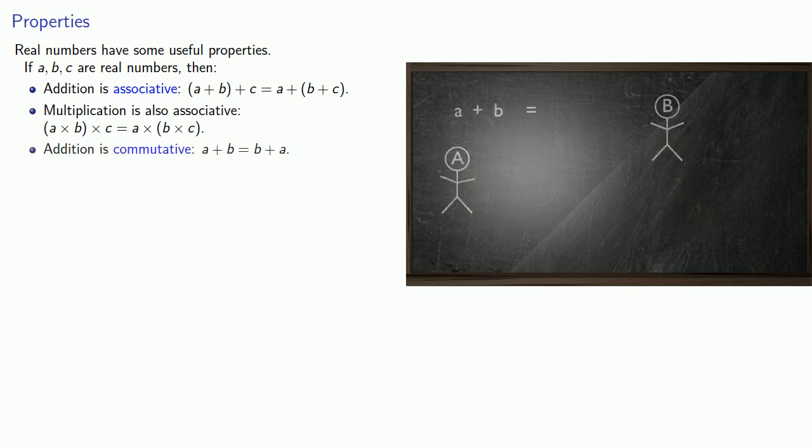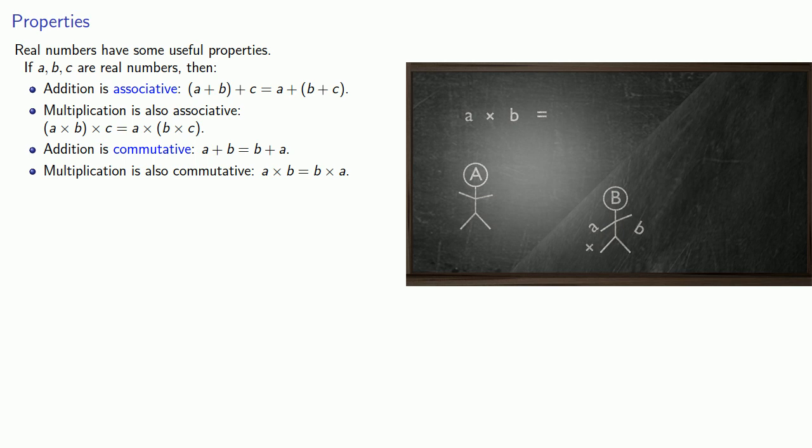Addition is also commutative. a plus b is the same as b plus a, and multiplication is likewise commutative. a times b is the same as b times a.